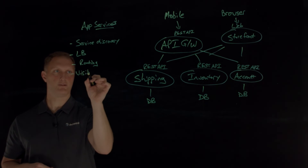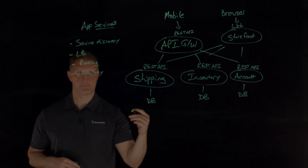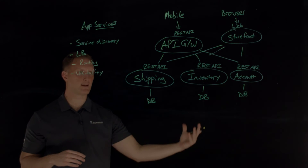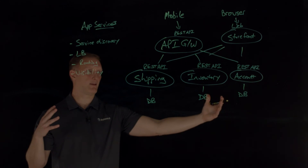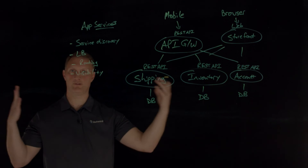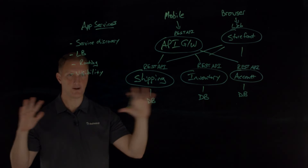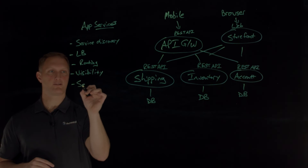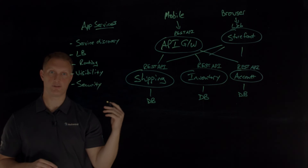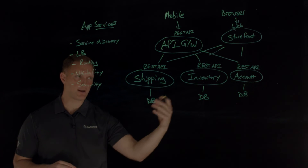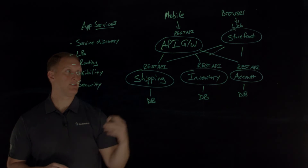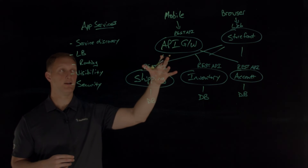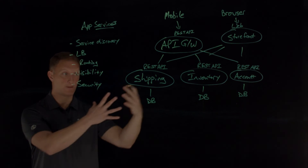Another application service is visibility — monitoring. You can only imagine how complicated this gets, especially with multi-cloud deployments involving thousands of containers across a variety of pods, nodes, and multiple Kubernetes clusters. It can get very complex very quickly, so you need to maintain good visibility over that entire application environment. Security is also a critical application service — things like RBAC (role-based access control) on inter-service interactions, a web application firewall, or DDoS protection to protect your application from attackers.